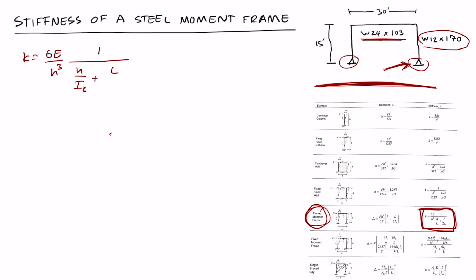Once we have that equation we could basically start plugging everything in. We know that the modulus of elasticity for steel is typically 29,000 ksi and the height is 15 feet. So let's do 15 times 12 is 180. And that is all multiplied by 1 over h which is 180.